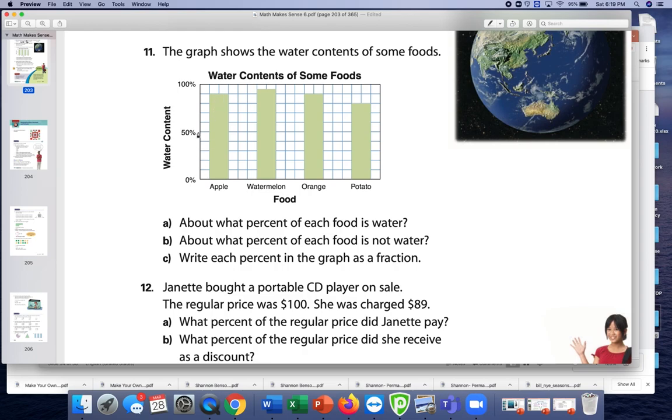An apple, we know that the bar graph is going up in increments of 10 because here we have 50. So this would be 60, 70, 80, 90. So this one you should have 90% for this one.